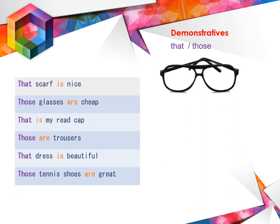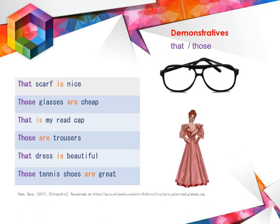Para los demostrativos que representan cuando el objeto está lejos, tenemos that y those. Por ejemplo, that scarf is nice — esa bufanda es muy bonita. Those glasses are cheap — esas gafas son baratas. That is my red cap. Those are trousers — esos son pantalones. That dress is beautiful — está lejano. Those tennis shoes are great.